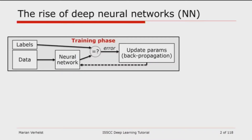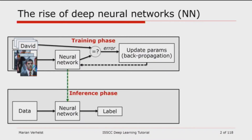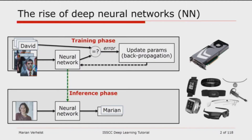All these applications work basically in two phases for the neural network. First, we're going to train the neural network by feeding it with many input data items, each with the corresponding correct classification labels. Through a series of backpropagation iterations we train the network to associate the correct label to every input item. Next, in a second phase, this trained neural network is provided with new data to which it then has to associate a label. The training phase typically happens on very computationally capable platforms — servers and GPUs. The inference phase, on the other hand, has recently been pushed more and more into embedded devices, where energy efficiency is of prime concern.